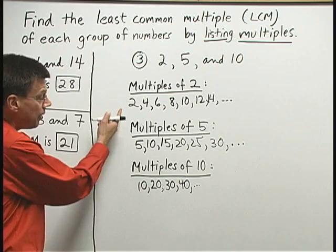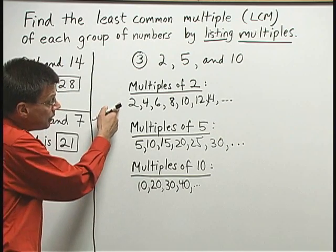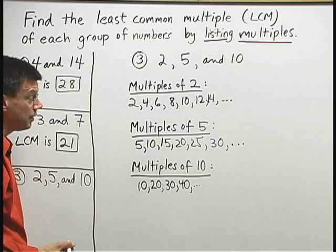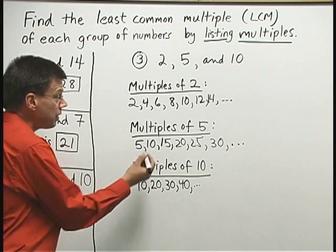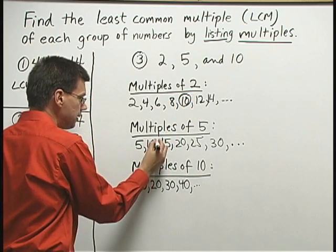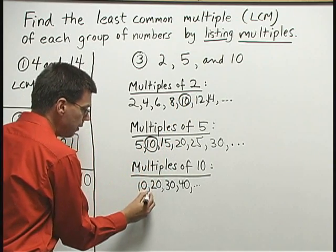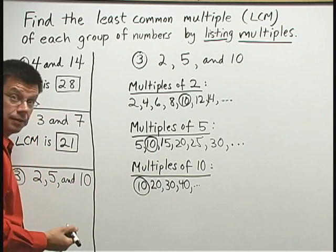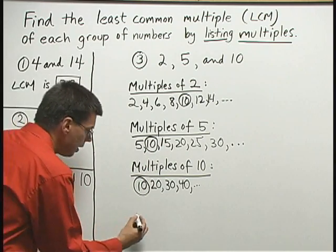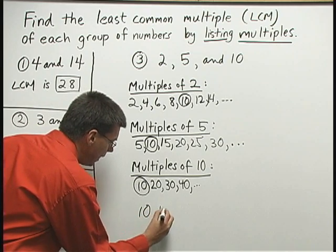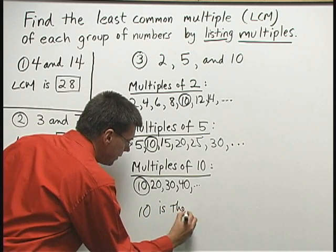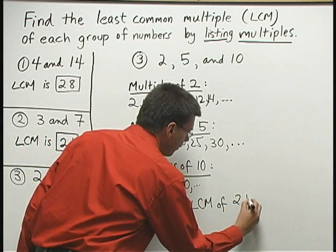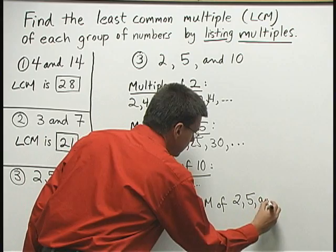Now to find the LCM of three different numbers, I need to find the smallest number that occurs on all three of these lists. And notice that that number is 10. The very first multiple of 10 actually is the least common multiple of these three numbers. 10 is the LCM of 2, 5, and 10.